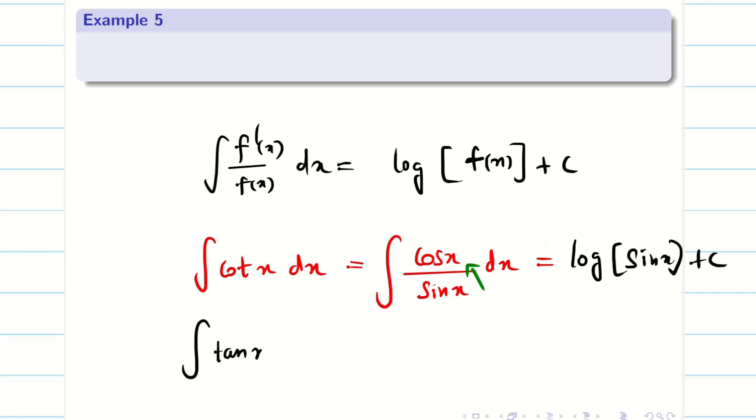Similarly when you have tan x dx, I can write it as sin by cos. Now I need one minus because cos differentiation is minus sin. So I can multiply minus inside and outside. So it will not affect the problem. The integral value is going to be minus log cos x + c.